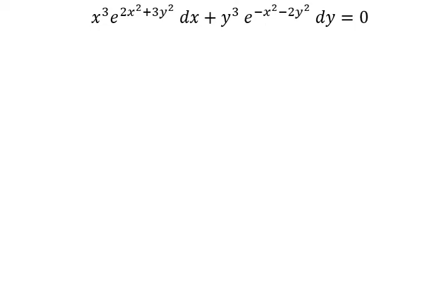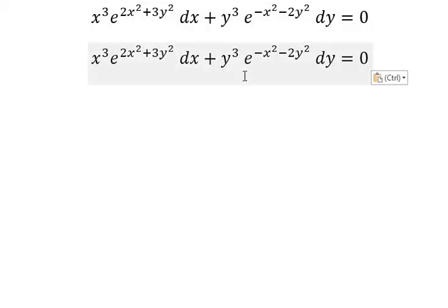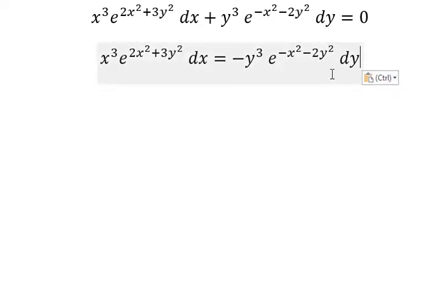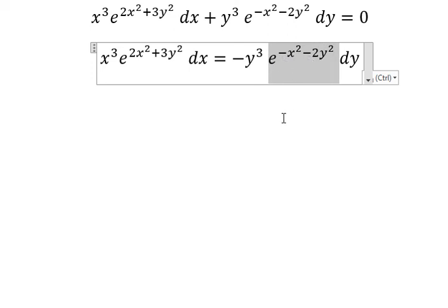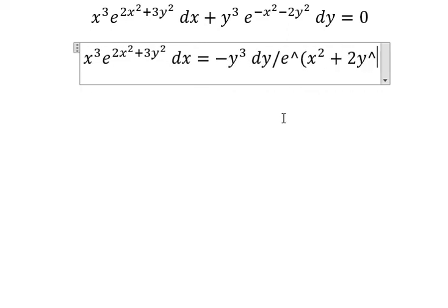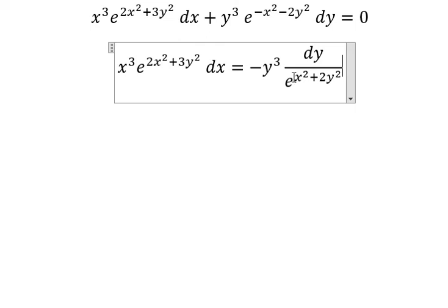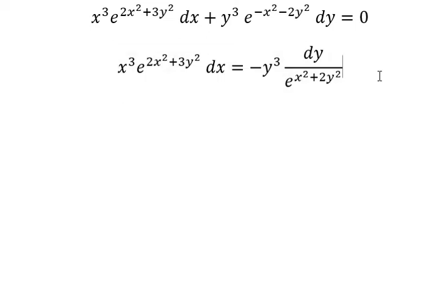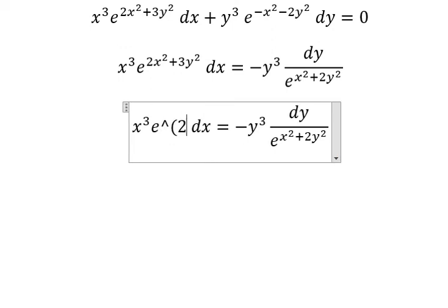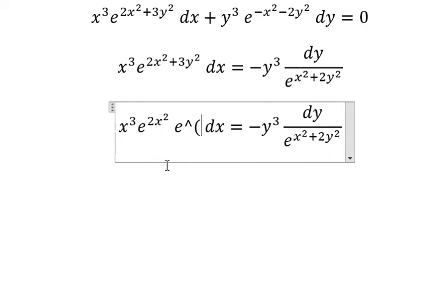Hello everybody. Today I will talk about calculus — the topic is differential equations. I will put this one on the right, and we have a negative here. This one has a negative on the power, so we can put it in the denominator. Next, we can separate this one and you get e to the power of 2s squared and e to the power of 3s squared.